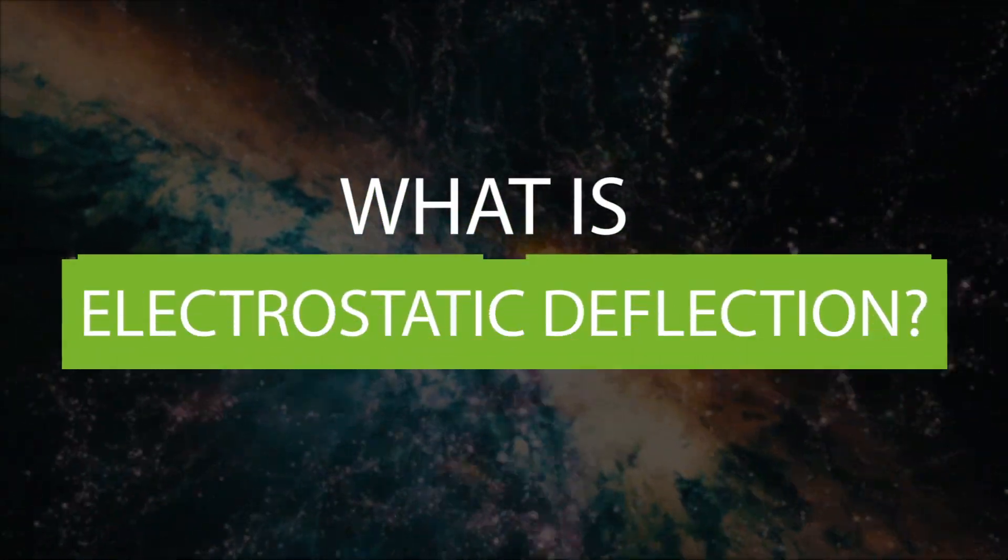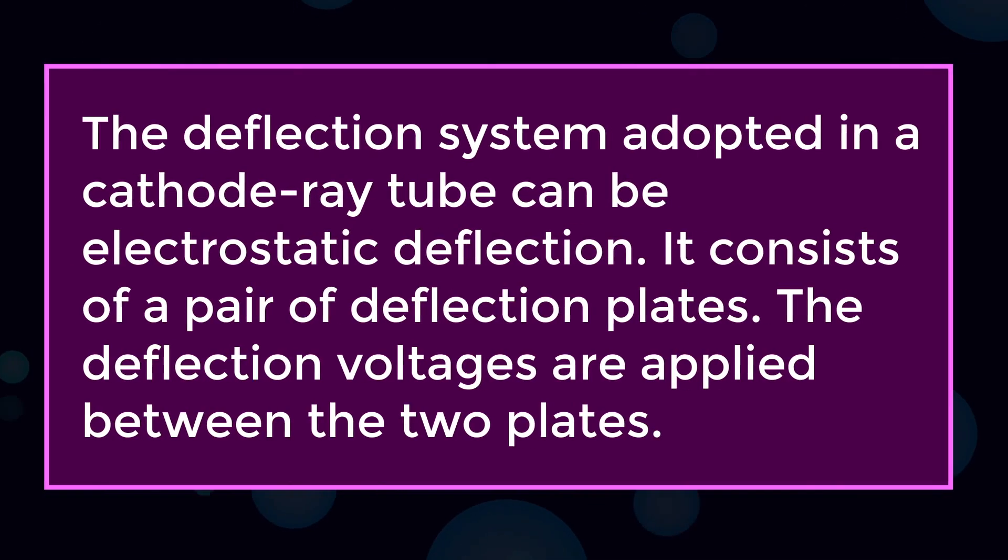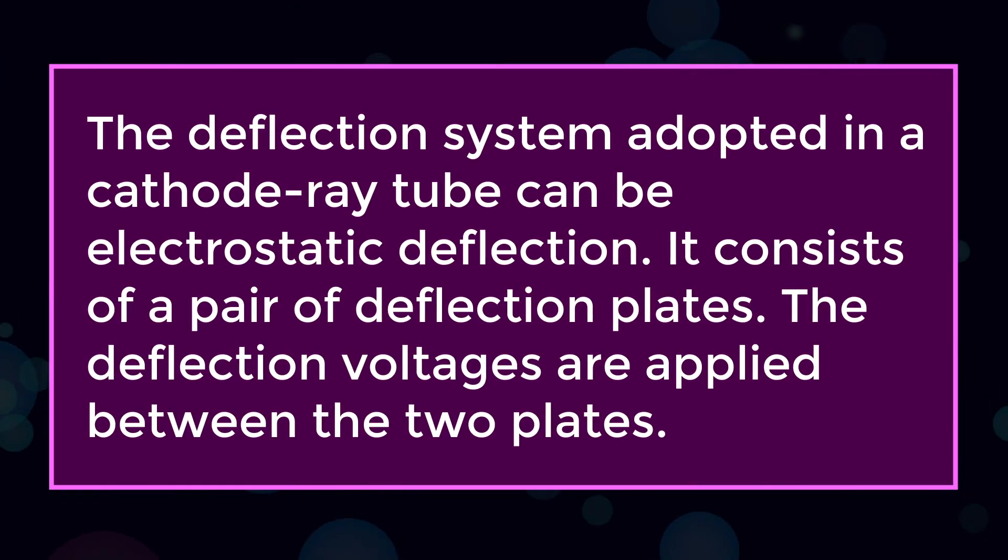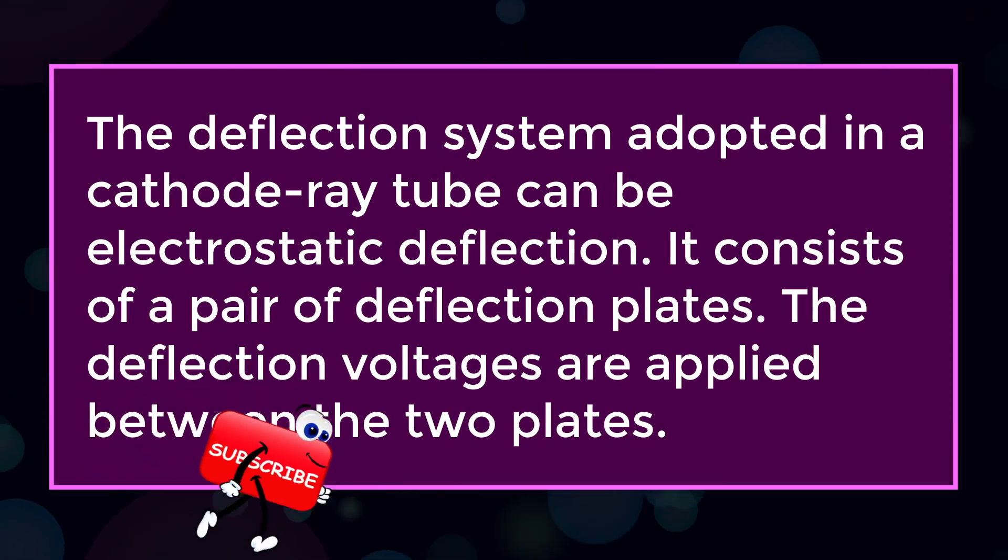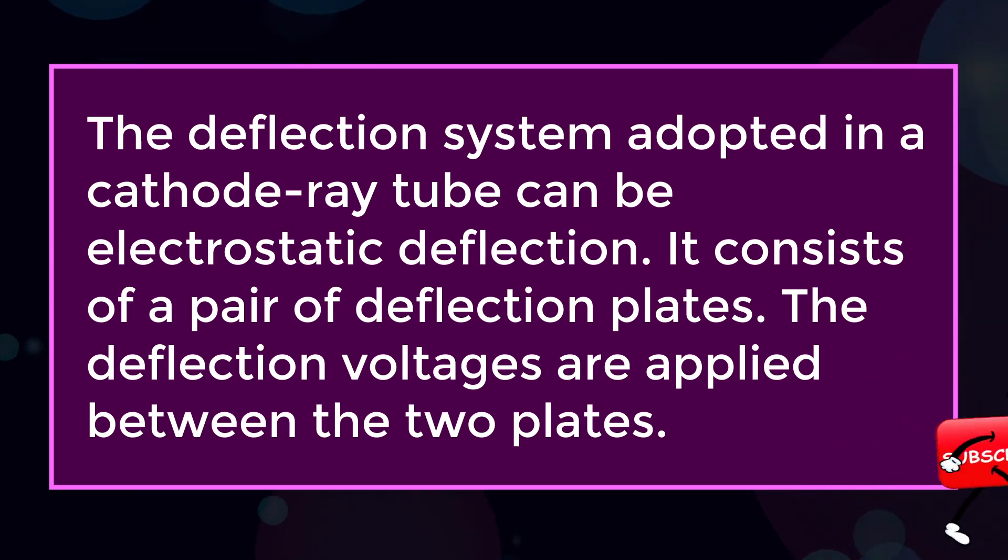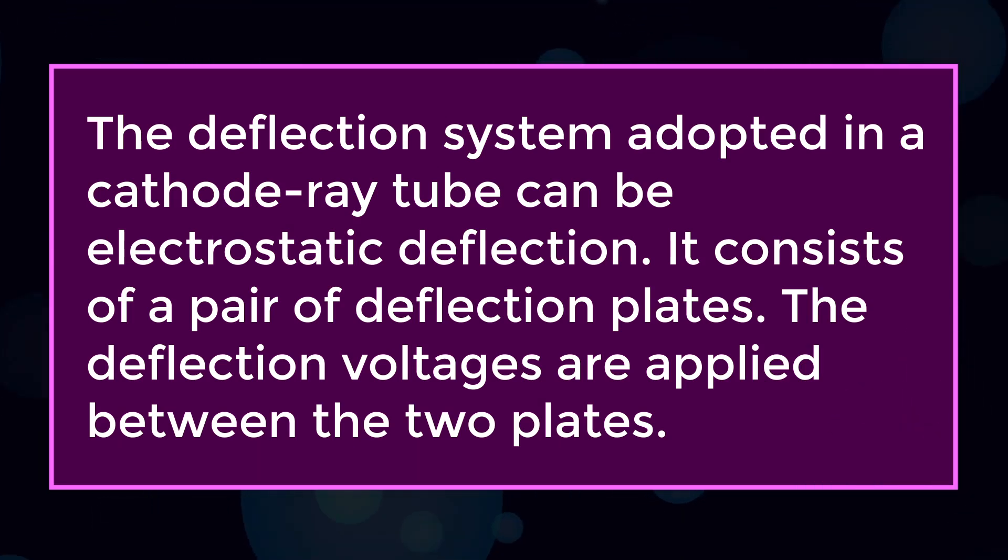What is electrostatic deflection? The deflection system adopted in a cathode ray tube can be electrostatic deflection. It consists of a pair of deflection plates. The deflection voltages are applied between the two plates.